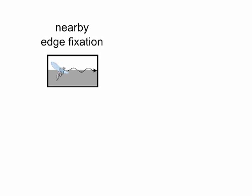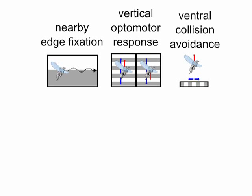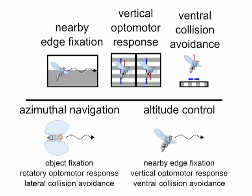To our knowledge, this is the first experimental evidence that freely flying animals adjust their altitude to the height of nearby visual features. Our paper also quantifies other altitude responses, such as a wide field compensatory response and an expansion avoidance response. Together, our results show a remarkable correspondence between the sensory-motor algorithms used to regulate motion in the horizontal and vertical domains.